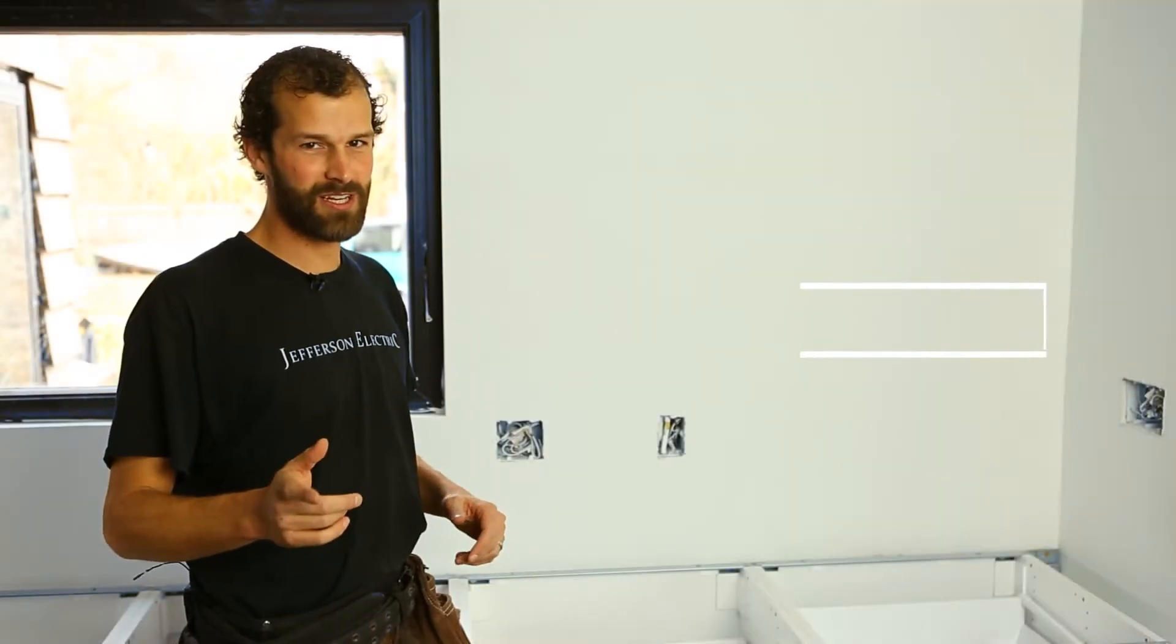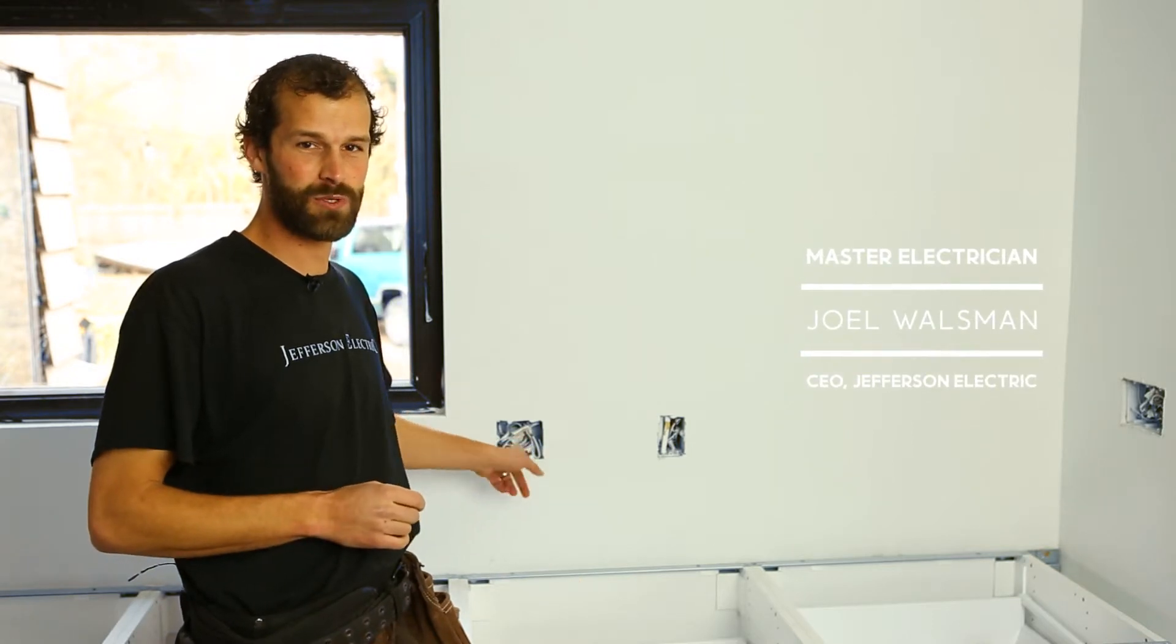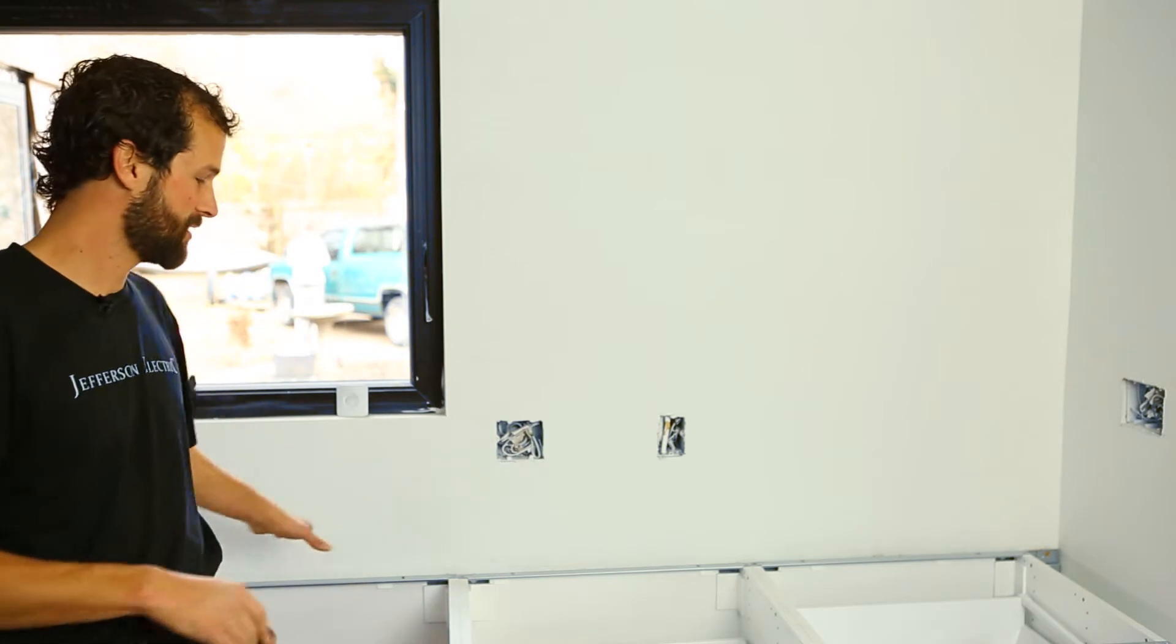Hey, this is Joel again with Jefferson Electric. We're gonna be installing two single-pole switches here. One switch is for the garbage disposal. Once the countertop is installed, this will be a kitchen sink, and the other single-pole switch is for the light over the sink.